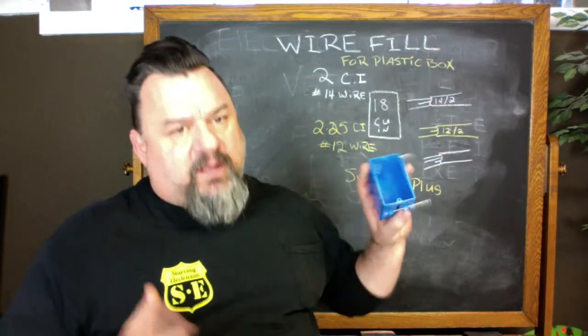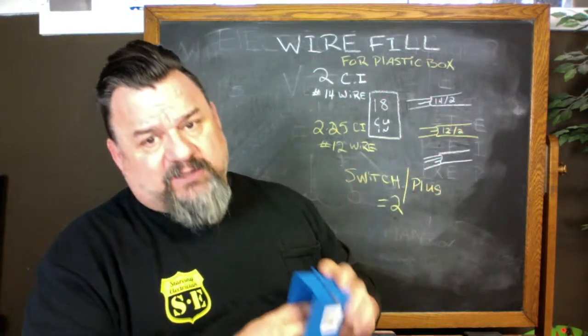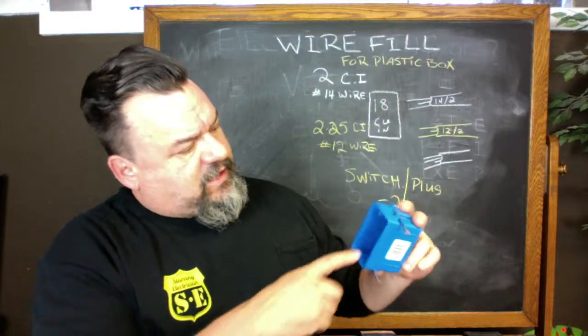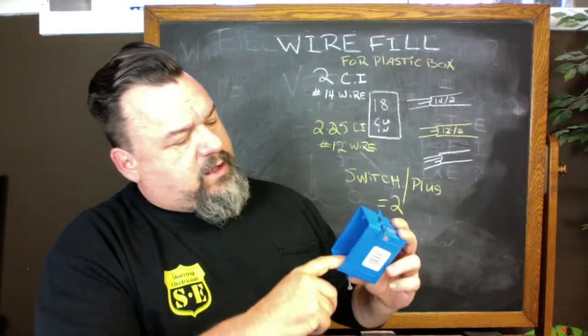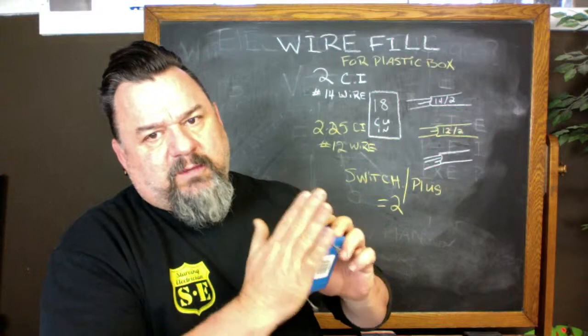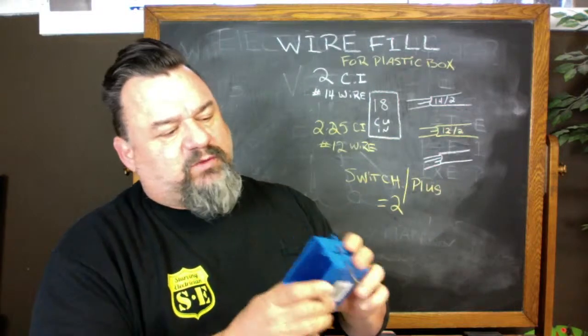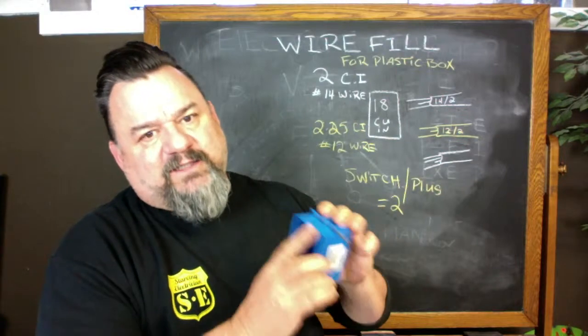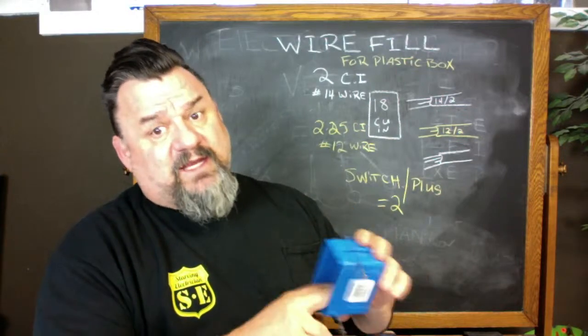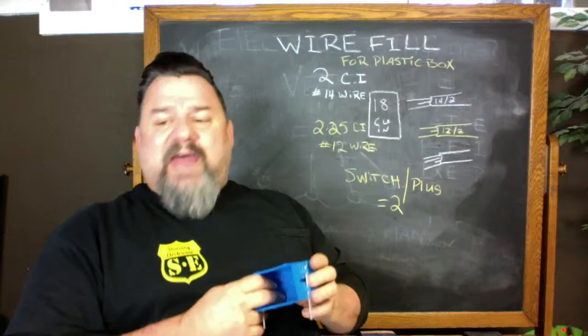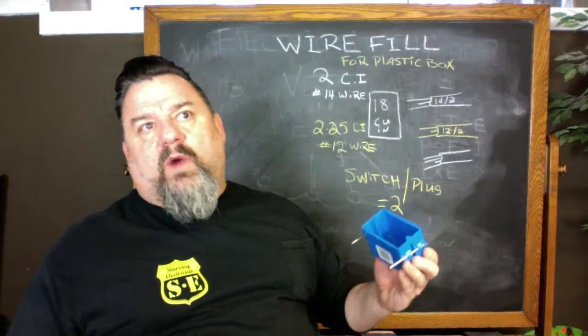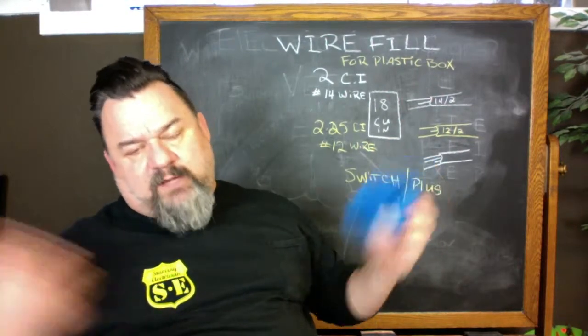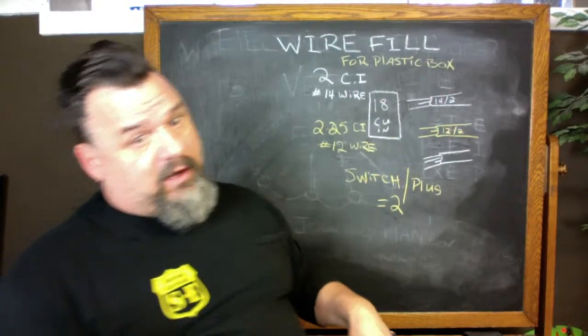All right. So let's get started. In every box, it's printed in the inside of here. How many cubic inches this box is. This one in particular, they come bigger, but this is a basic plastic residential box comes 18 cubic inches. That's how big or how many wires can go in there. That's how they base it on.